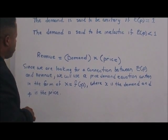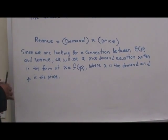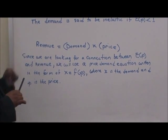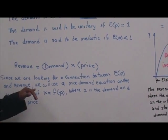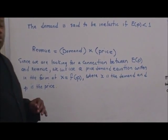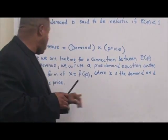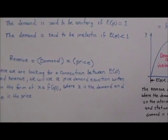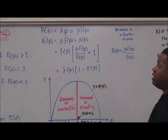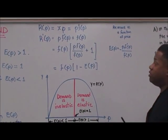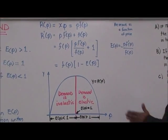Now let's look at the derivation here — how the elasticity E of P relates to the revenue. Since we're looking for a connection between these two relationships, we will use a price-demand equation written in the form X equals F of P, where X is the demand and P is the price. R of P equals X times P, which equals P times F of P, and the derivative R prime of P equals P times F prime of P plus F of P.